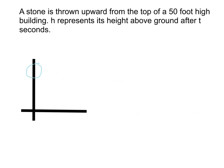Let's try one more example. A stone is thrown upward from the top of a 50-foot-high building. H represents its height above ground after t seconds. Now in this problem, H would be the dependent variable because the height of the stone depends on how many seconds have passed. T, or time, would be the independent variable. So, we'll label t on the horizontal axis and h on the vertical axis.